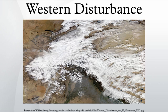Western disturbance occurs in India, Pakistan and Nepal to describe an extratropical storm originating in the Mediterranean, that brings sudden winter rain into the northwestern parts of the Indian subcontinent. This is a non-monsoonal precipitation pattern driven by the westerlies. The moisture in these storms usually originates over the Mediterranean Sea and the Atlantic Ocean. Extratropical storms are a global, rather than a localized, phenomena with moisture usually carried in the upper atmosphere.